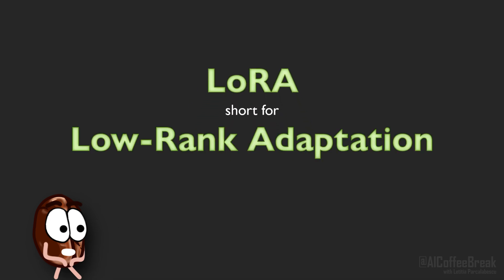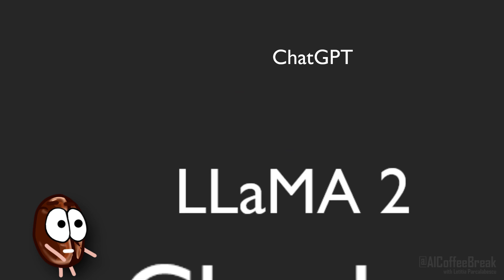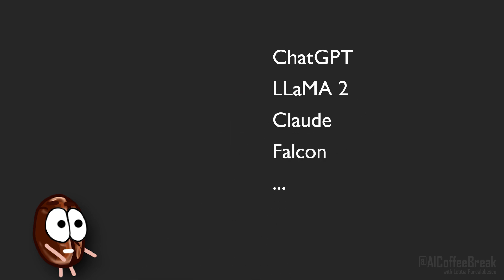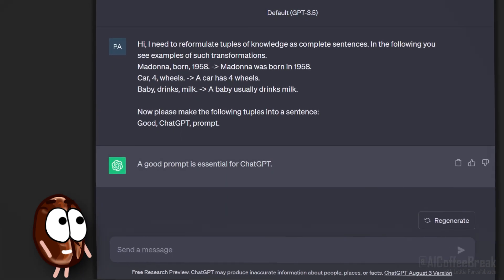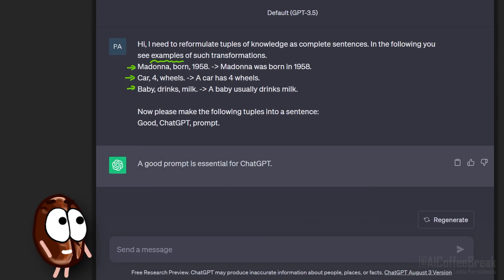LoRa is short for low-rank adaptation and comes in really handy because the cool chatbots and language models that we have been using, such as GPT-3, ChatGPT, LAMA-2, Clawed Falcon and so on, are very general purpose. Prompting them correctly by asking the question right plus showing them some examples in the input only gets us so far and usually works for domains that the model has already seen in pre-training.